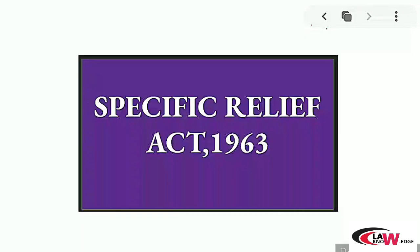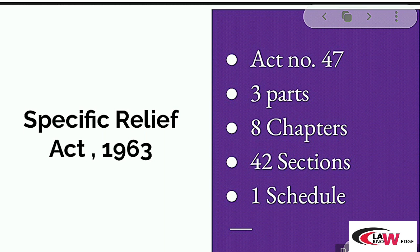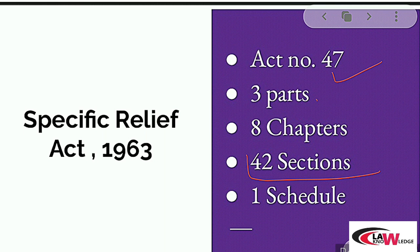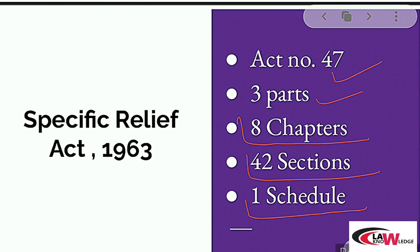Today we are officially starting our discussions regarding the Specific Relief Act. First, let us see the arrangement of the sections and how this Act has been framed. This is Act number 47, meaning it was the 47th Act of the year 1963. The total sections in this Act are 42, and these 42 sections are divided into three different parts: Part 1, Part 2, and Part 3. Parts 2 and 3 are further divided into eight different chapters, and at the end there is one schedule attached. It is a relatively short Act.